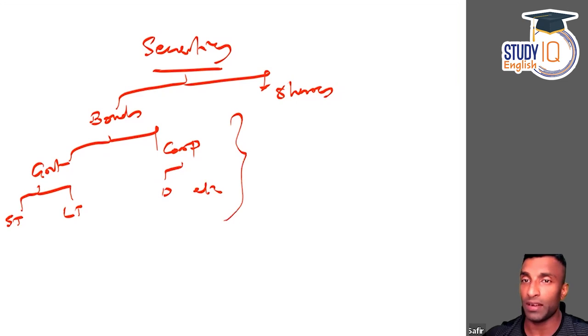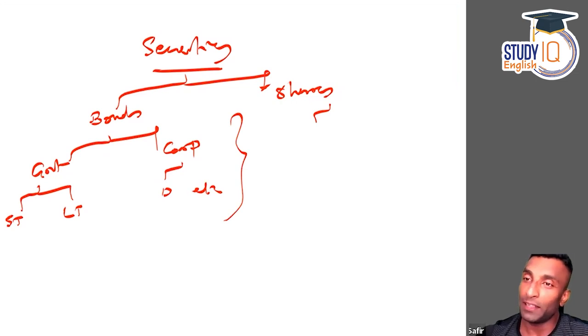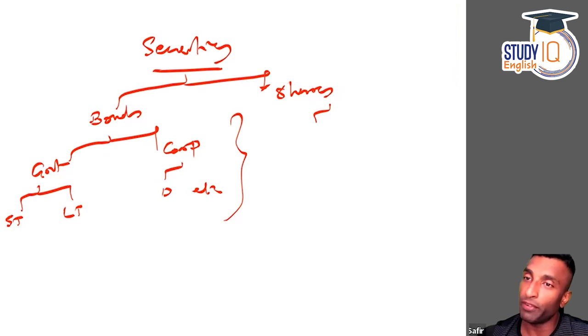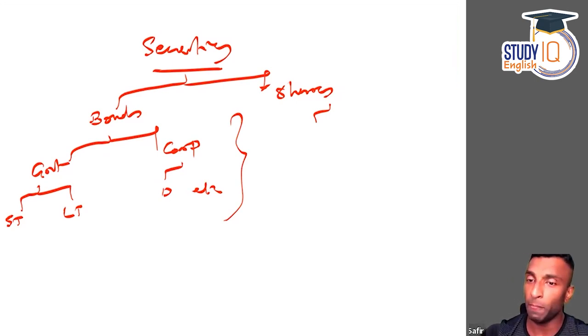Shares include ordinary shares, which you can directly buy from the stock exchange, and preference shares. Both are different. That's it, guys. I hope you liked the video. Give a thumbs up, comment below if you have any questions, and consider subscribing to the channel. Thank you.